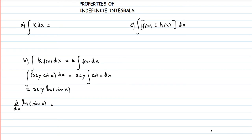The derivative of ln(sin(x)): the derivative of what is inside — sin(x) — is cos(x), so we get cos(x) divided by sin(x), which equals cot(x). This confirms that the integral of cot(x) is ln|sin(x)|.